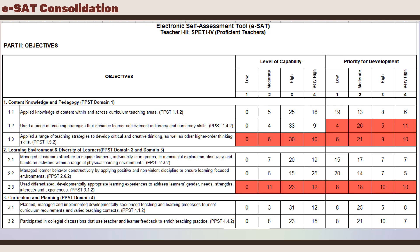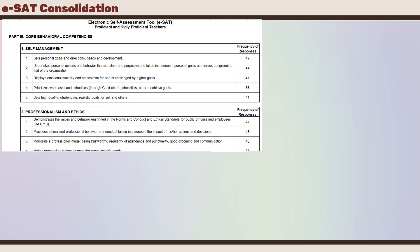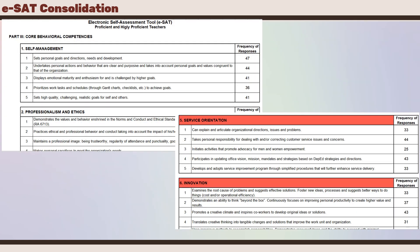Notice that there are items highlighted in red. These are the objectives where the teachers indicated a lower level of capability as well as their priority for development. There are also core behavioral competencies, with priorities highlighted as well.